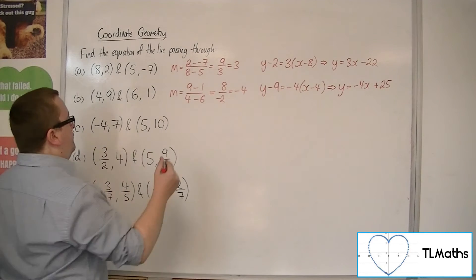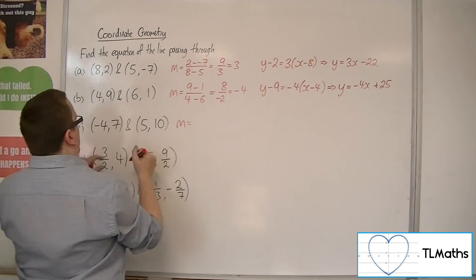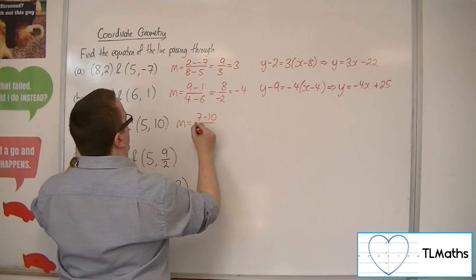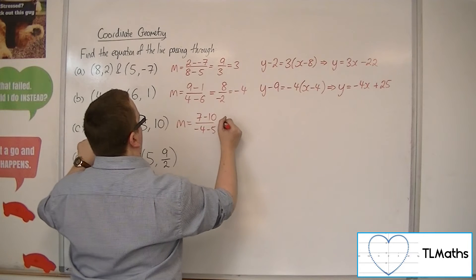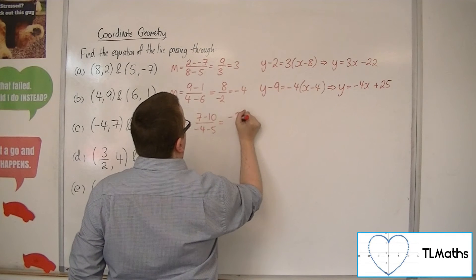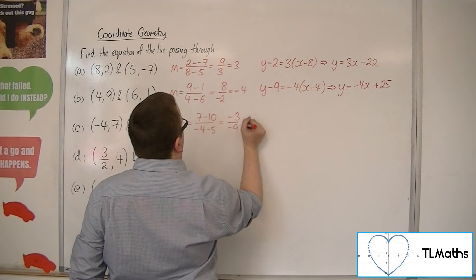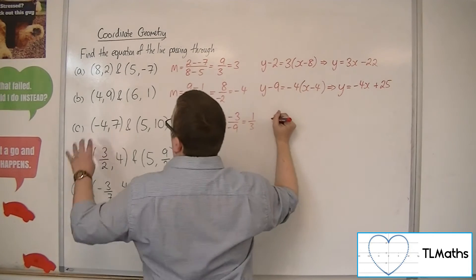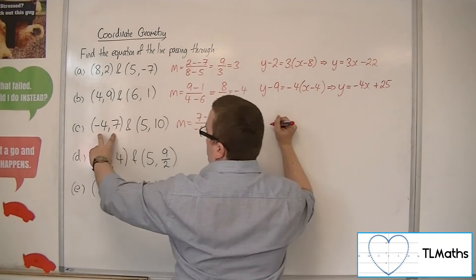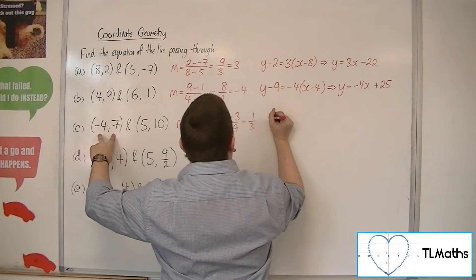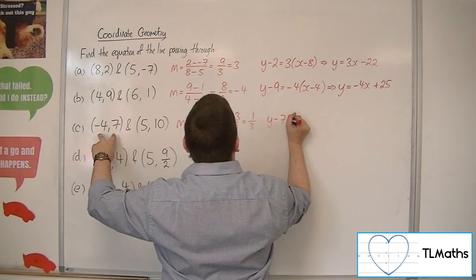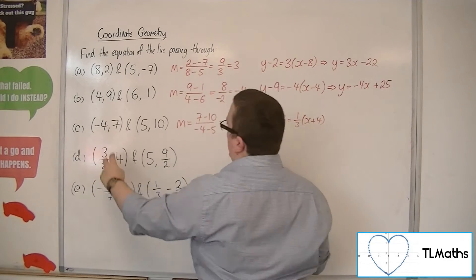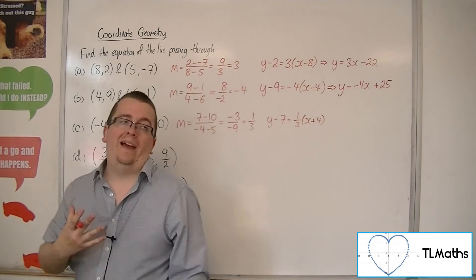For c, gradient first: 7 take away 10, over minus 4 take away 5. So we'll have minus 3 in the numerator and minus 9 in the denominator, so the gradient is a third. So if we use (-4, 7) as x1, y1, we'll have y minus 7 is equal to 1 third times (x plus 4), since x take away minus 4 is x plus 4.